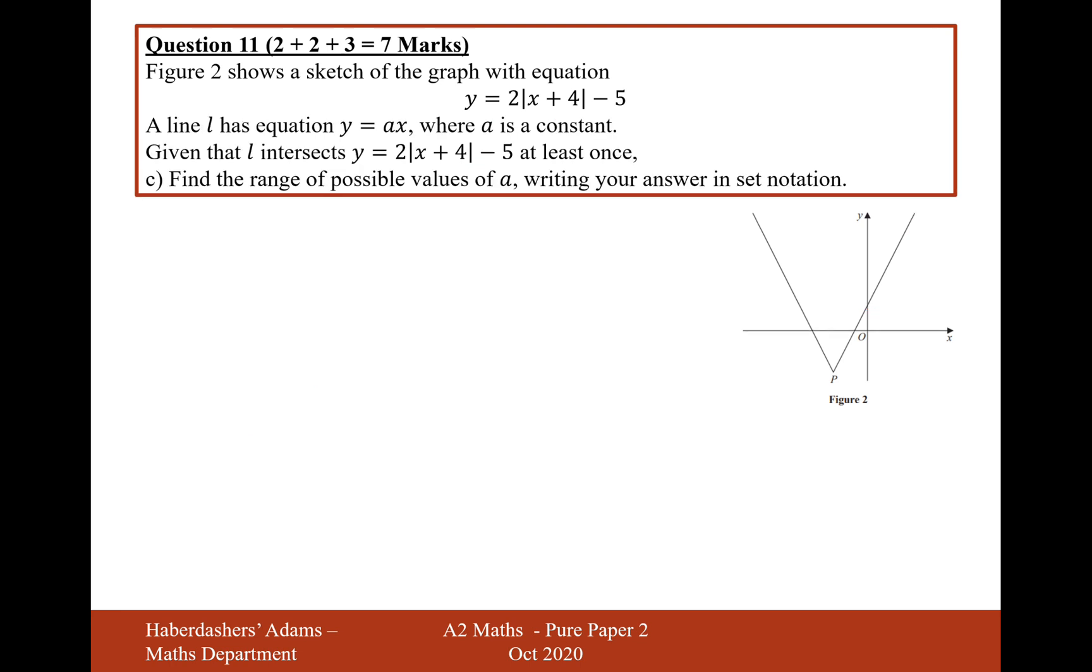Let's now move on to part C. A line L has equation y equals ax, where a is a constant. Given that L intersects the graph y equals 2 mod x plus 4 minus 5 at least once, find the possible range of values for a. Write your answer in set notation. So my line here is going to have to go through 0, 0, because it's y equals ax. And it's going to be intersecting at this point here, above this point, because it says at least once.